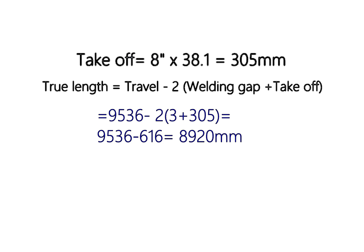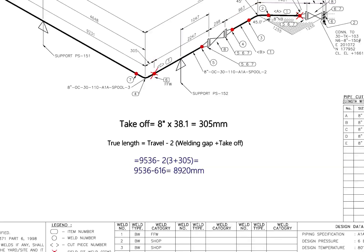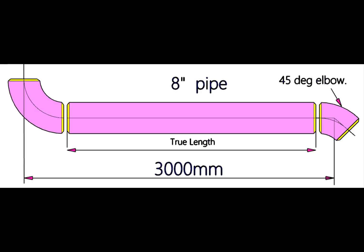So the cut length is 8,920 millimeters. Let us try another example. This piping has an 8 inch 90 degree long radius elbow and a 45 degree elbow. To calculate the take off of a 45 degree elbow, multiply the diameter in inches by 0.4142.